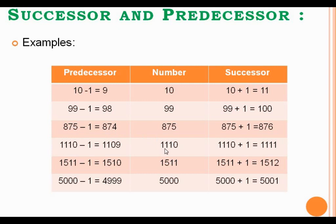In the next example, the given number is 1110. For finding the successor of the given number, you have to just add 1 to the given number and you will get the successor of that particular number. And for finding out the predecessor of the given number, you have to just subtract 1 from the given number, and you will get the predecessor.